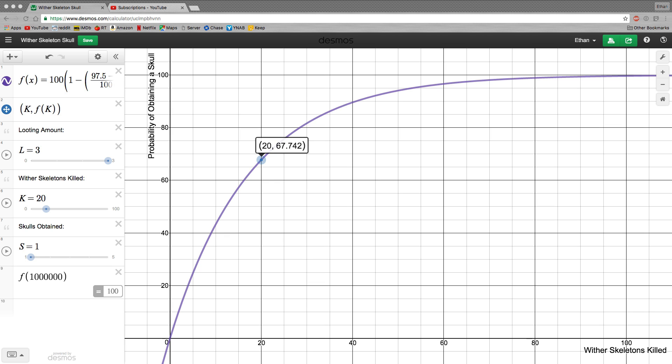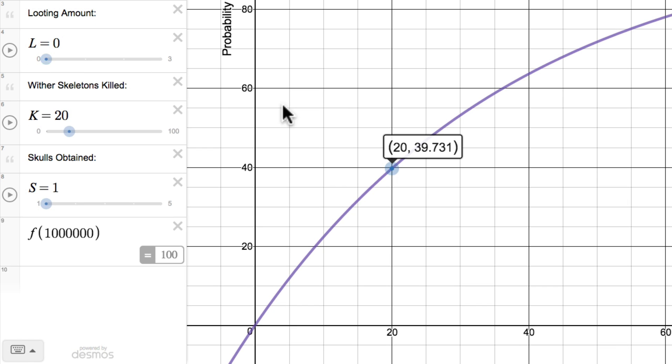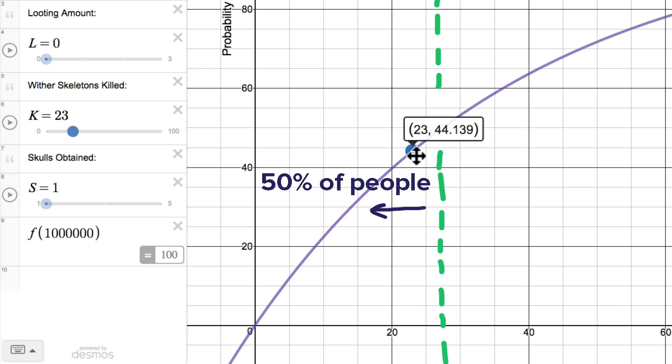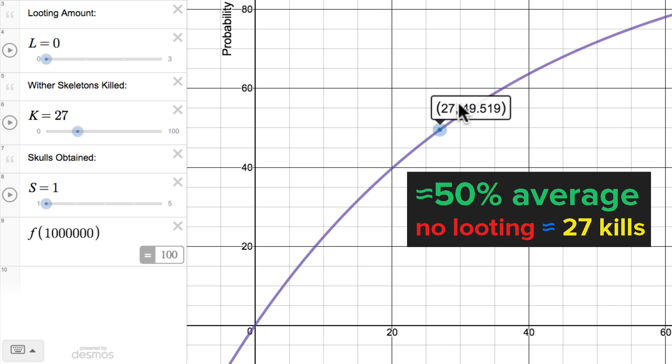It's all a matter of chance. There is an average. To find this average, all we need to do is find the 50% mark on the graph. Because at that point, half of people will take less than that many kills to obtain a skull, and the other half will take more.